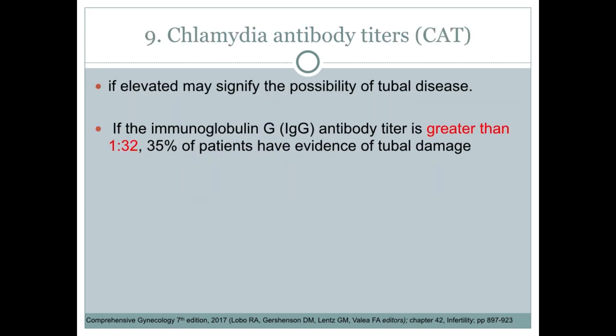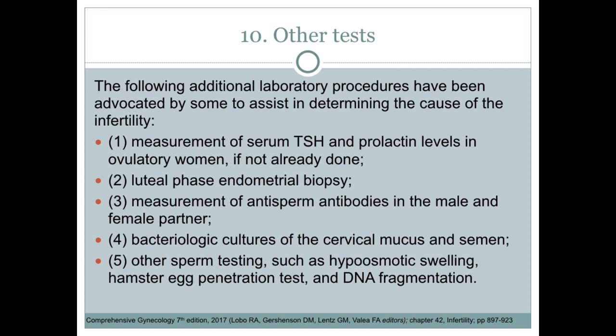We can also do chlamydia antibody titers — if elevated, this may signify the possibility of tubal disease. If the IgG antibody titer is greater than 1:32, then 35% of patients may have evidence of tubal damage. Other additional laboratory procedures include TSH and prolactin levels in ovulatory women, luteal phase endometrial biopsy, measurement of anti-sperm antibodies in the male and female partner, bacteriologic cultures, and other sperm testing.